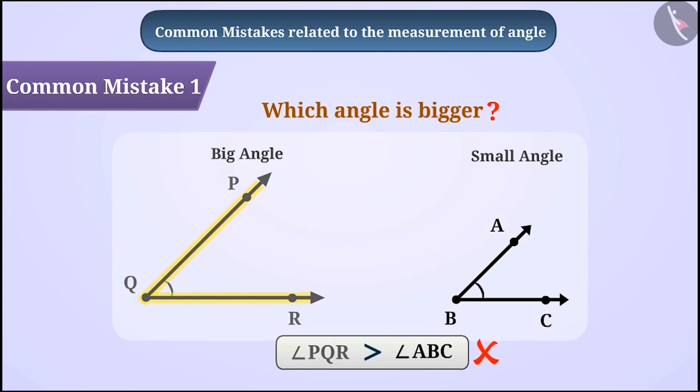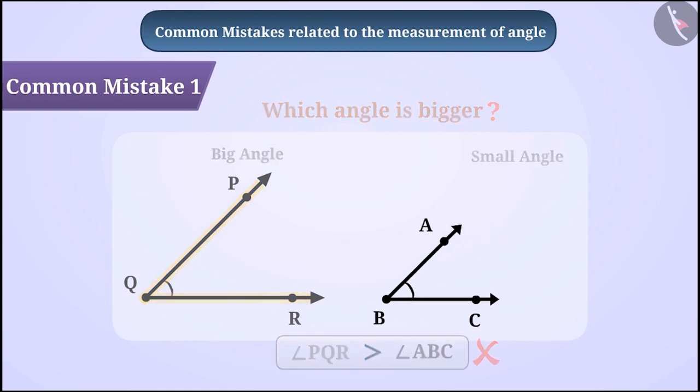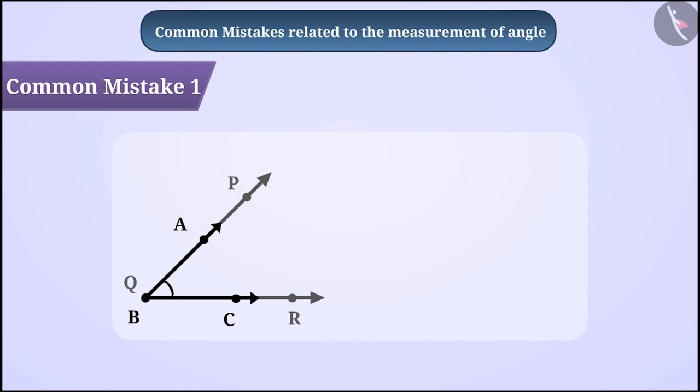But this is a mistake and it is wrong. If we arrange both angles one above the other, then we come to know that both the angles are equal.